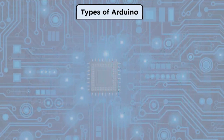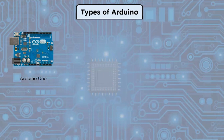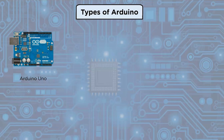Now let us look at the different types of Arduino boards. First, we have Arduino Uno. Arduino Uno includes everything you need to get started — 14 digital I/O pins, six analog inputs, a USB port, a power jack, and a reset button. You can plug it into a computer with a USB cable or power it with an AC-to-DC adapter or battery.